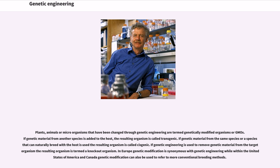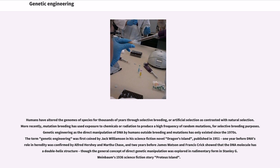Humans have altered the genomes of species for thousands of years through selective breeding, or artificial selection, as contrasted with natural selection. More recently, mutation breeding has used exposure to chemicals or radiation to produce a high frequency of random mutations. Genetic engineering as the direct manipulation of DNA by humans outside breeding and mutations has only existed since the 1970s. The term 'genetic engineering' was first coined by Jack Williamson in his science fiction novel Dragon's Island, published in 1951, one year before DNA's role in heredity was confirmed by Alfred Hershey and Martha Chase, and two years before James Watson and Francis Crick showed that the DNA molecule has a double helix structure.